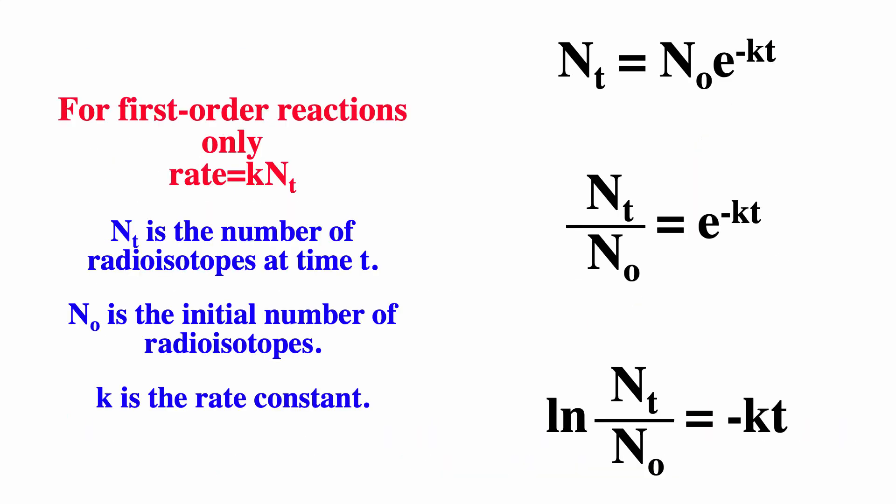When we talk about kinetics, we developed some equations for first-order processes, and the equations are exactly the same. For a first-order process, the rate is proportionate to the number. Often in a nuclear process, we'll talk about the number of isotopes. When we talk about kinetics, we use concentration. Using this, we can develop a couple equations. The concentration at time t is equal to initial concentration times e to the minus kt. Use this top equation to calculate the concentration at time t, given the initial concentration and the rate constant. This bottom equation gives you t equals minus one over k natural log concentration at time t over initial concentration. You can use this equation to calculate how long it takes to get to a certain concentration.